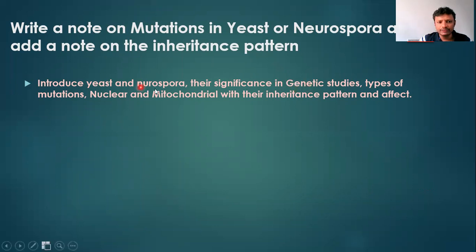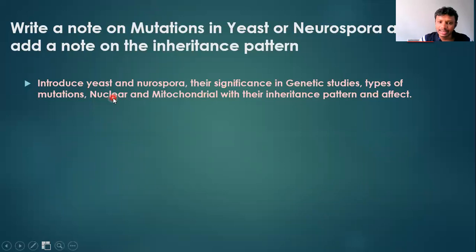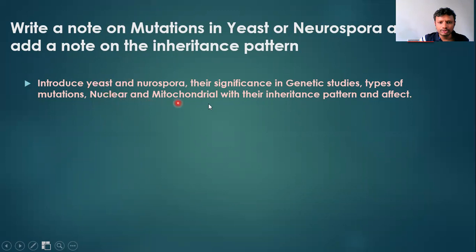Once you define this, write the types of mutations present in these organisms: nuclear mutations and mitochondrial mutations. The mitochondrial mutation in Neurospora is poky inheritance, and the nuclear mutations are auxotrophs and prototrophs with respect to amino acids. With respect to yeast it is the petite inheritance and the types of segregation — segregational, suppressive, and neutral — and their effects. If you can write all this then it means you have understood the mutations in yeast and Neurospora.